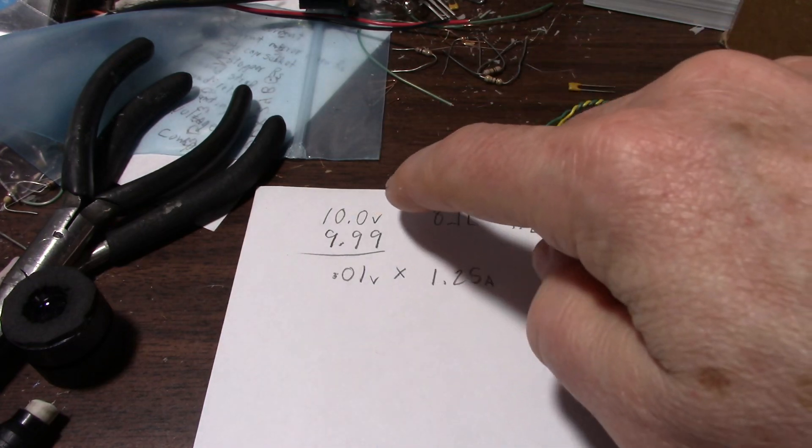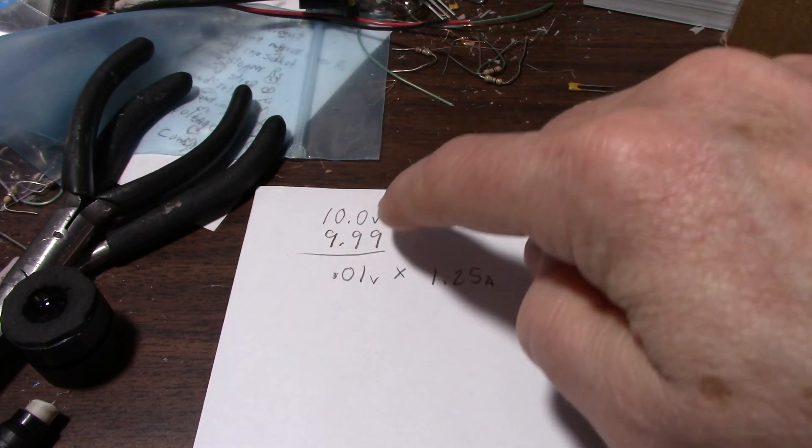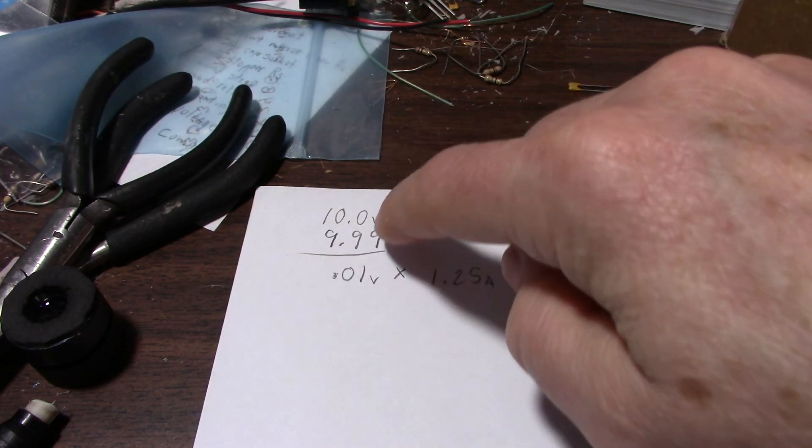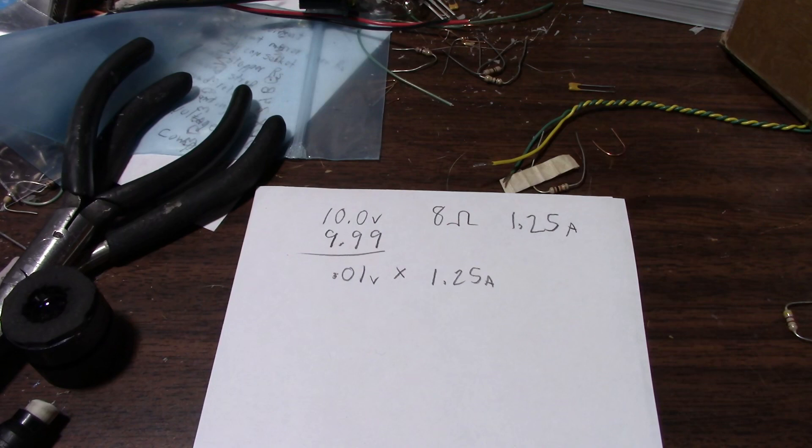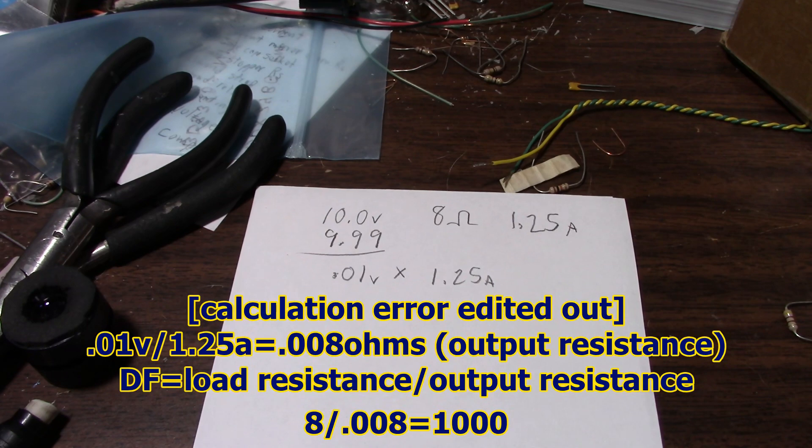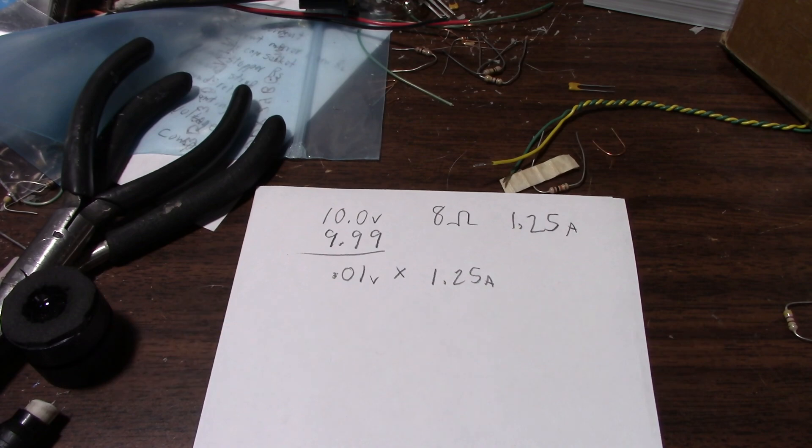Let's pretend for a moment that the amplifier did have a small change. The minimum resolution that I can measure. And let's say it dropped from 10 volts to 9.99. That's a 0.01 volt change. So, with 9.99 divided by 8, we get about 1.25 amps.